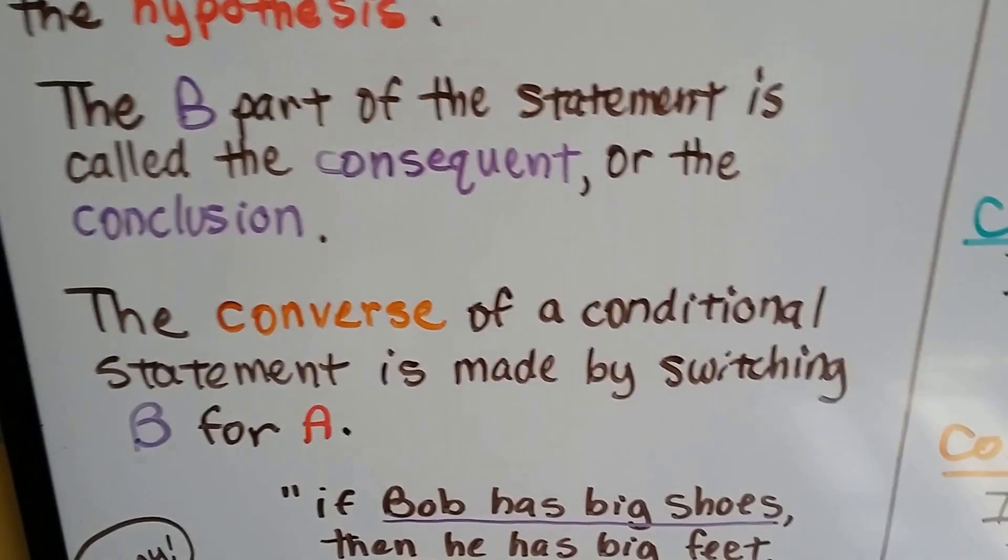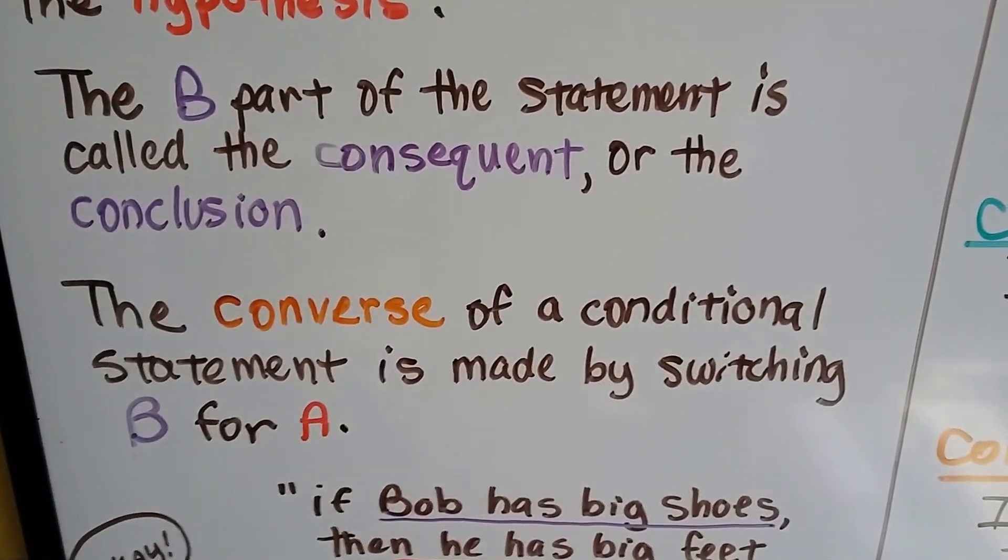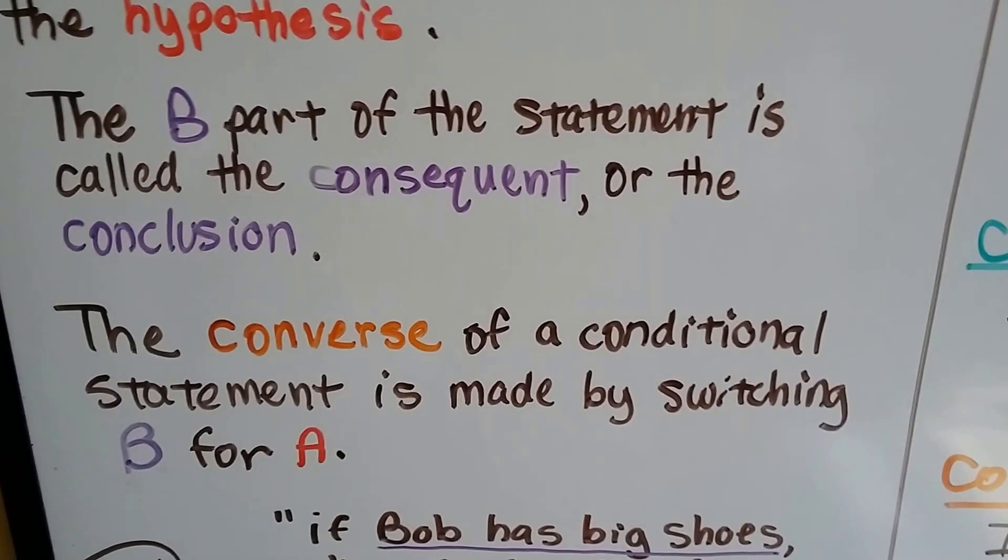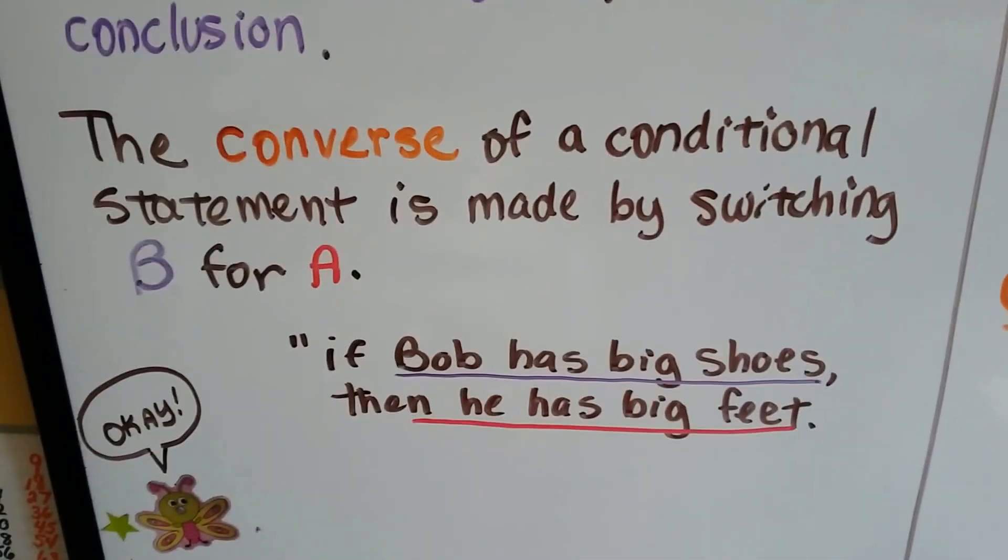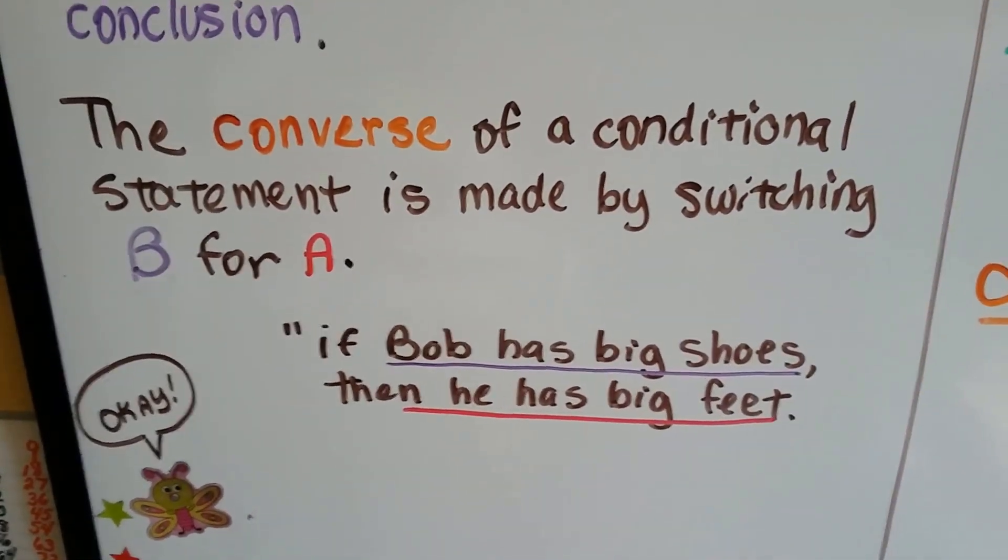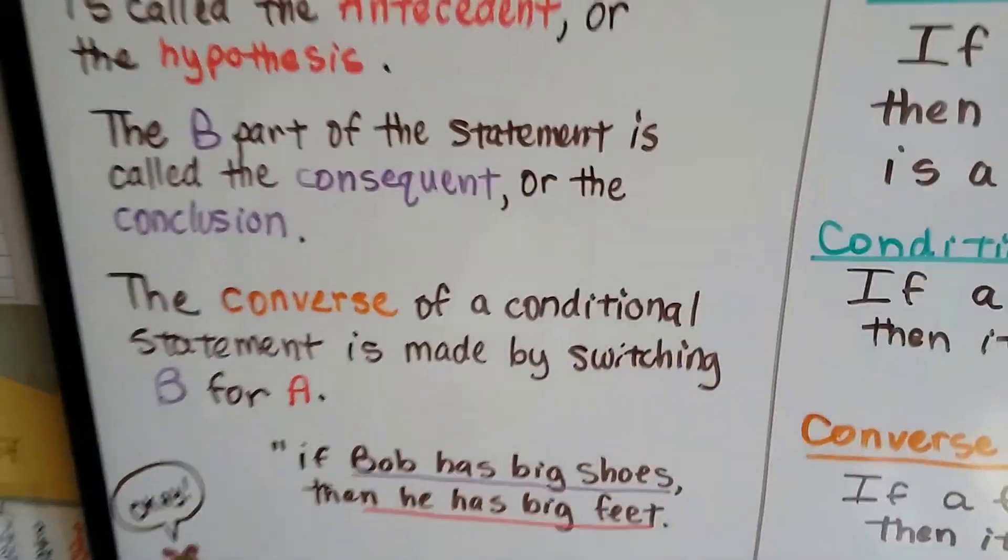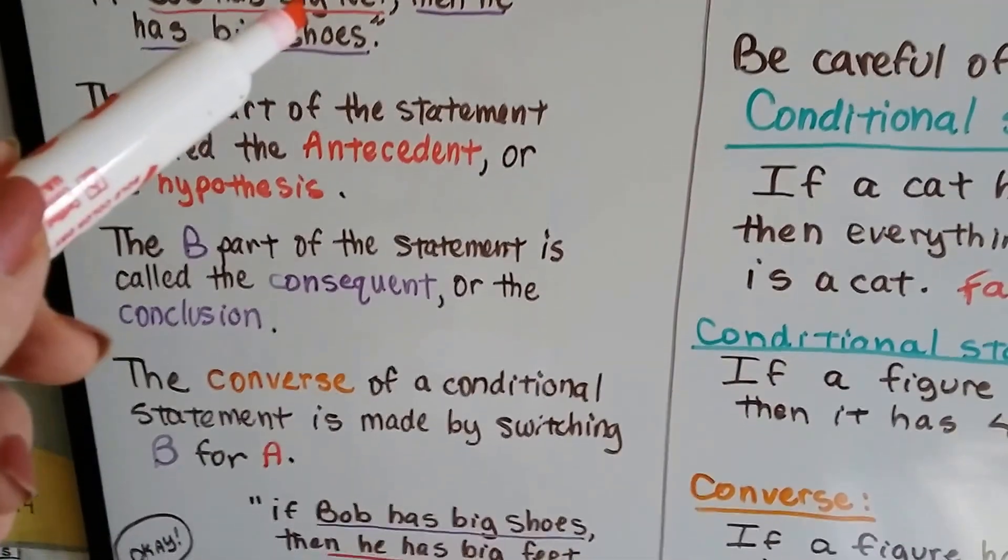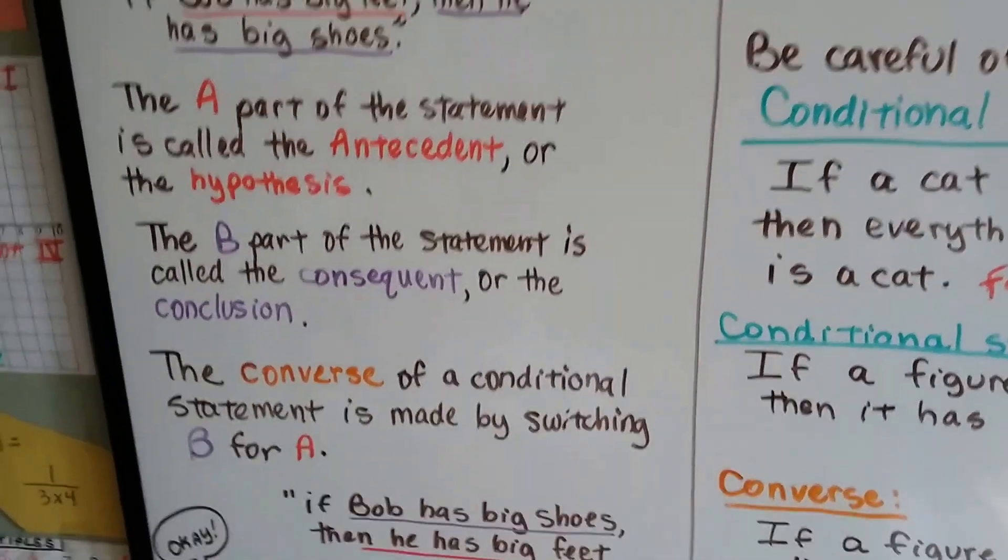Then we have the converse. The converse of a conditional statement is made by switching B for A. So I say, if Bob has big shoes, then he has big feet. We just switched it around. Instead of saying big feet first, now we say big shoes first. That's the converse.